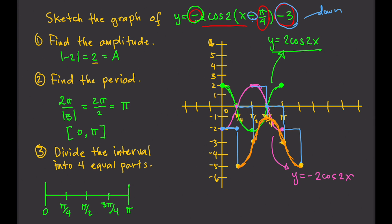That's the final graph of y equals negative 2 cosine of 2 times x minus pi over 4, minus 3. To recap: we found the amplitude to get the height, the period to get the length, divided 0 to pi into 4 equal parts, sketched 2 cosine 2x, flipped the graph because of the negative, then applied the phase shift of pi over 4 to the right and vertical shift of 3 units down. And that's the graph of our function.